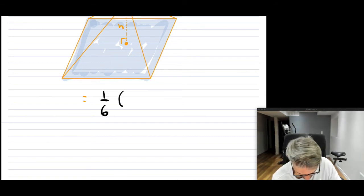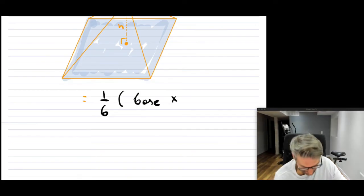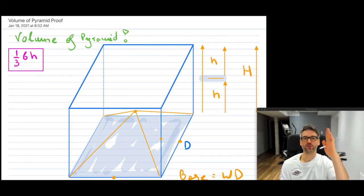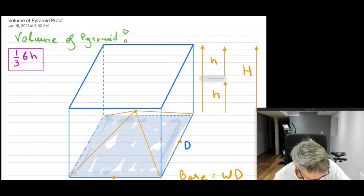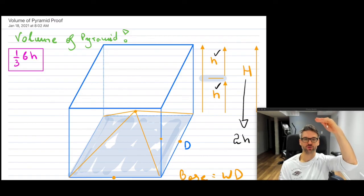Now the cube is the base multiplied by, notice, by the big H, by the height of the cube. But that H, so this H, is just equal to two h's, two of these small h's, right? H plus H, which is two h. So we have basically this, two h.